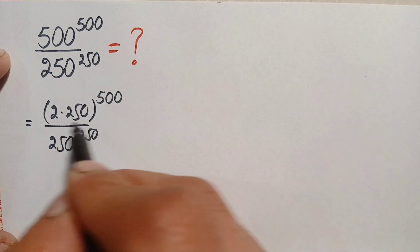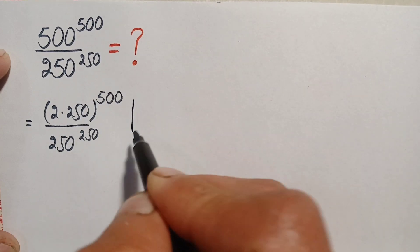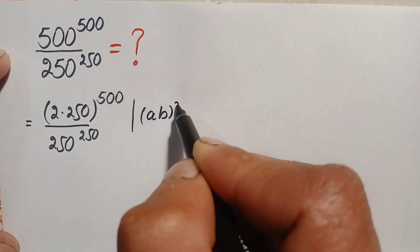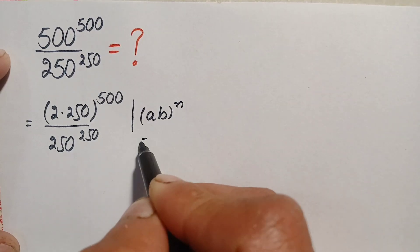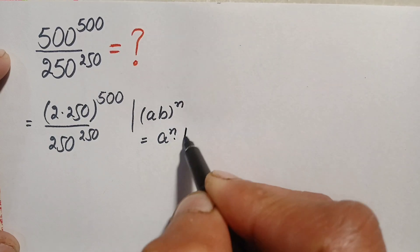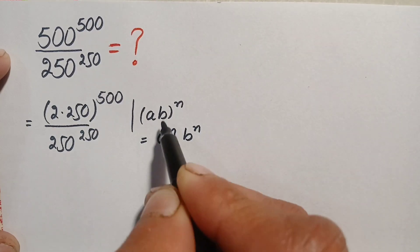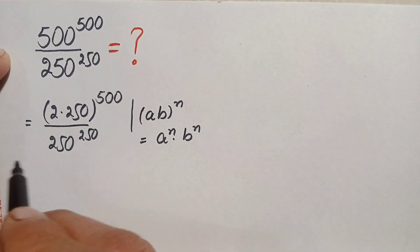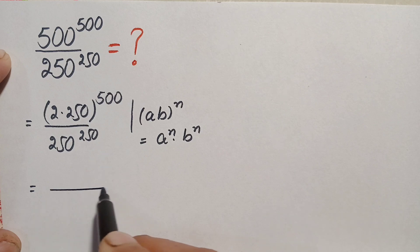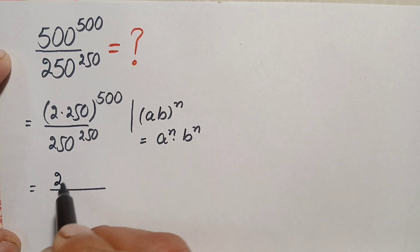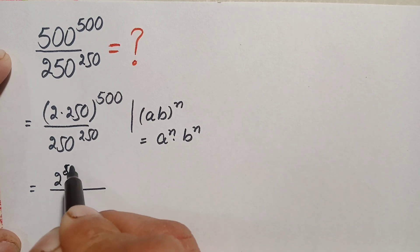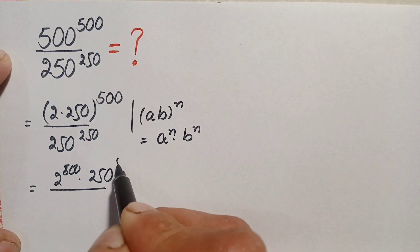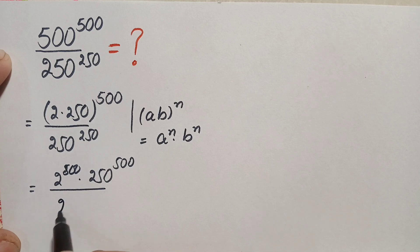In the numerator, we will use the exponential identity: (a times b) raised to power n equals a raised to power n times b raised to power n. Using this identity, we spread the power over 2 and 250, so the numerator becomes 2 raised to power 500 times 250 raised to power 500.